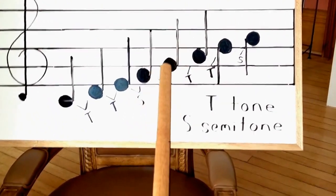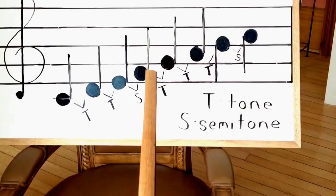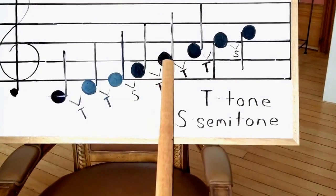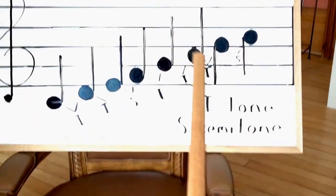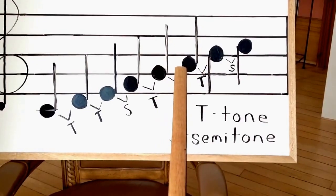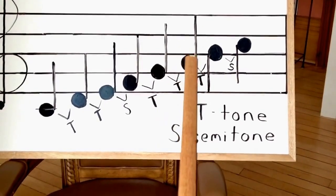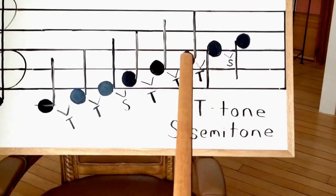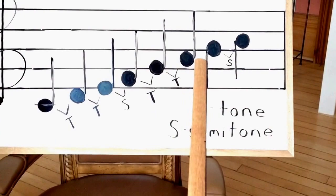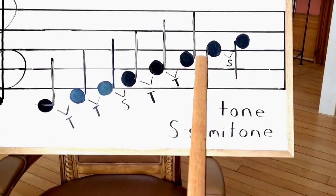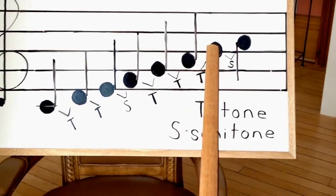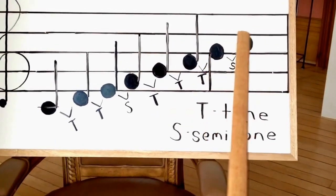F to G, we skip F sharp or G flat for a tone. G to A, we skip G sharp or A flat for a tone. A to B, we skip A sharp or B flat for a tone. And then our semitone is B to C again.